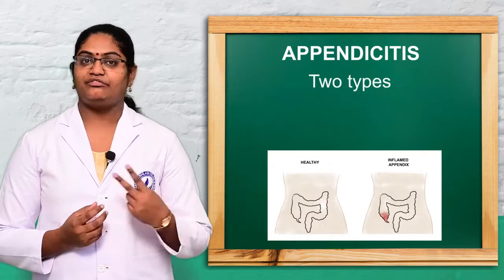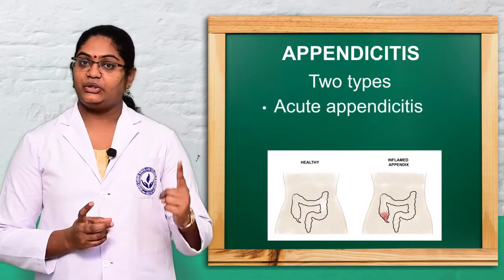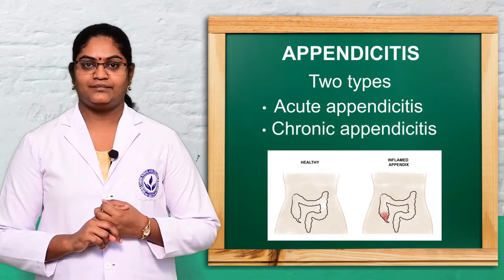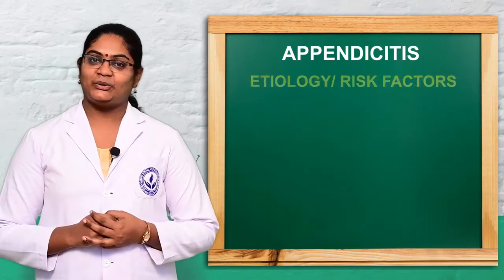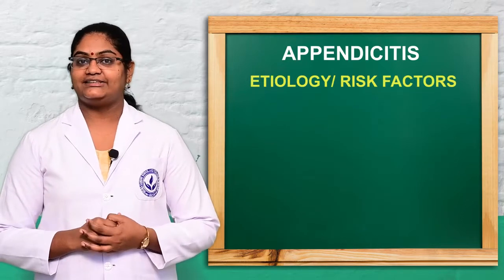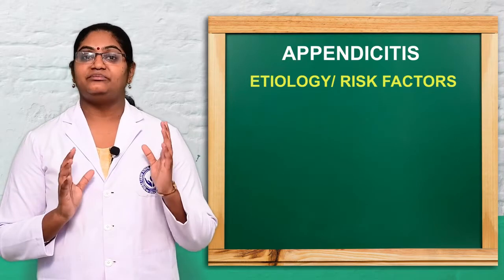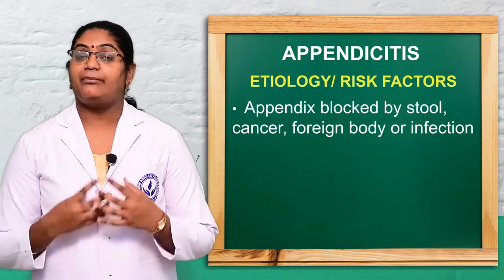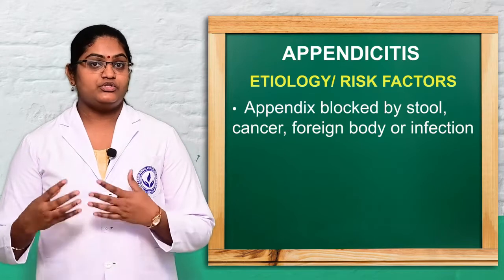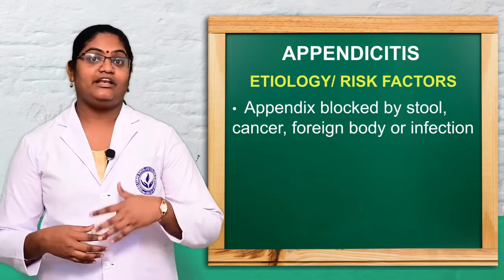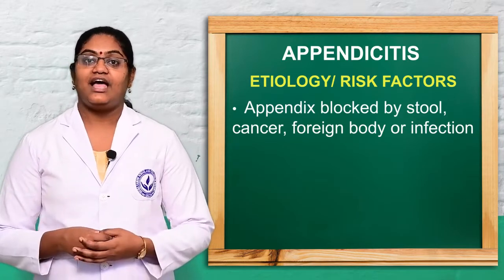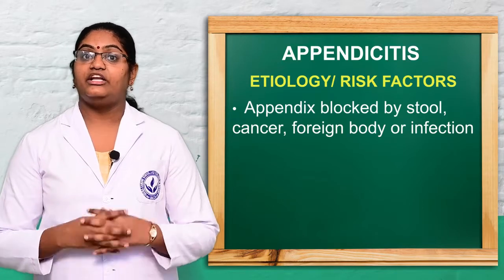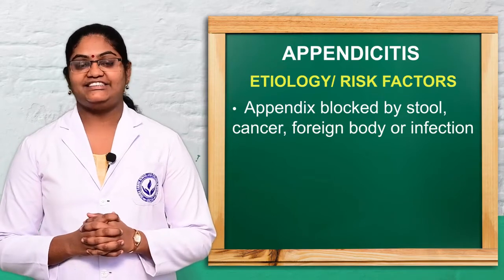Mainly there are two types of appendicitis: acute appendicitis and chronic appendicitis. The causes, or etiology, mainly include obstruction or blockage of the appendix due to stool, cancer, any foreign bodies, or any kind of infections. These are the main causes of appendicitis.